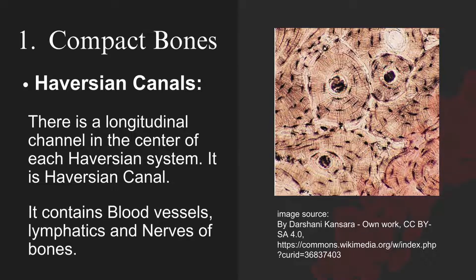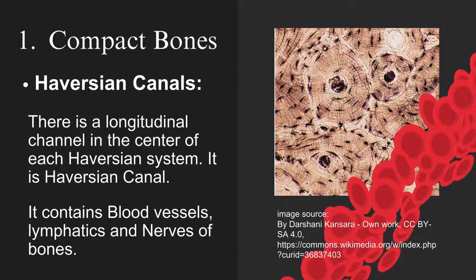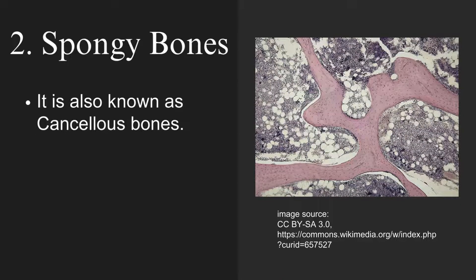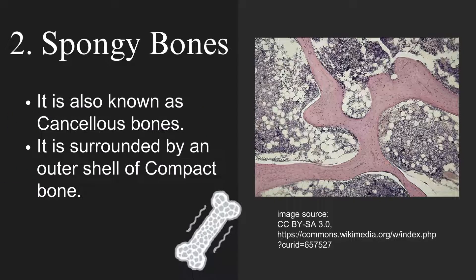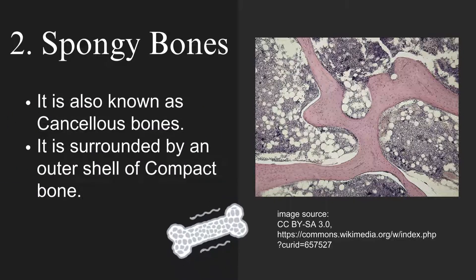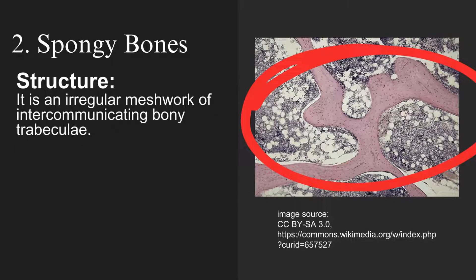Next is spongy bones. It is also known as cancellous bones. It is surrounded by an outer shell of compact bone. Structure of spongy bones: it is an irregular meshwork of intercommunicating bony trabeculae.